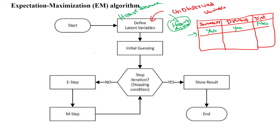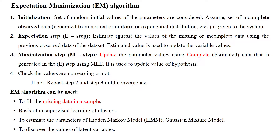For the parameters, we have to assign some initial values. Initially we assign values to the parameters theta. Then with these parameters and the three observed features, we apply the E-step estimation step. A set of random initial values is given to the parameters theta, and the set of incomplete observed data — that is, the features in the data set — is also taken.